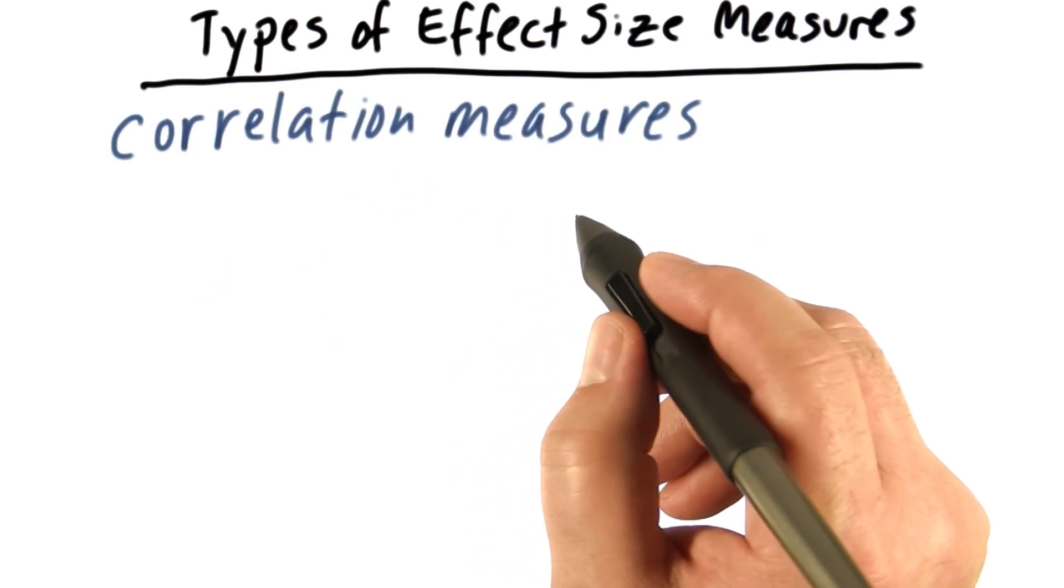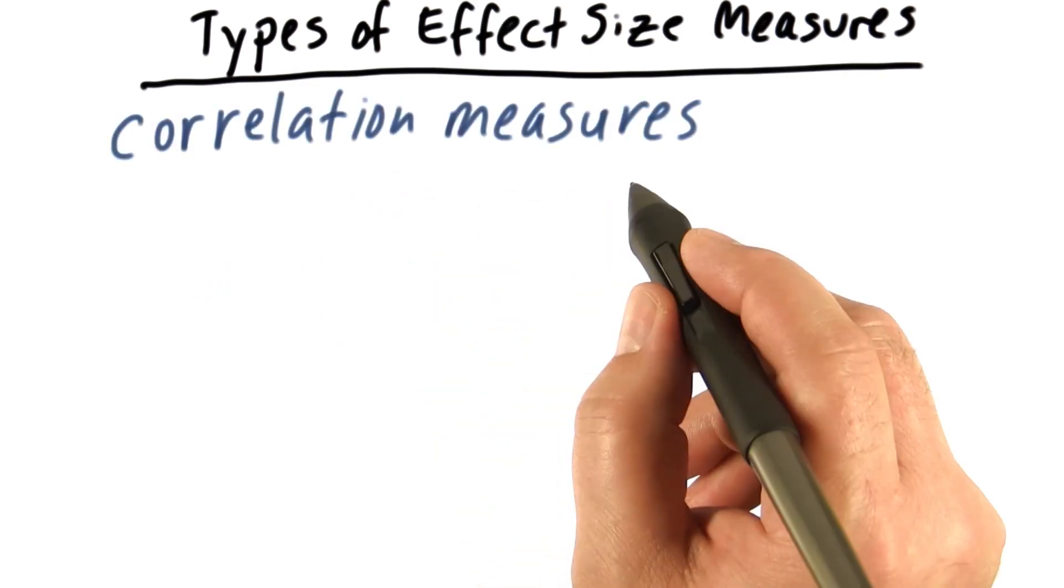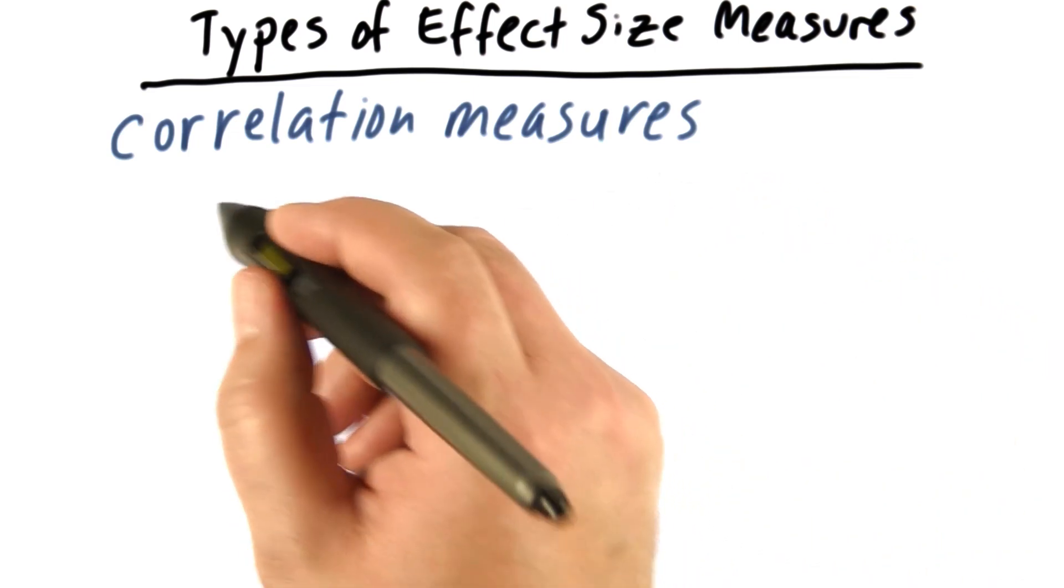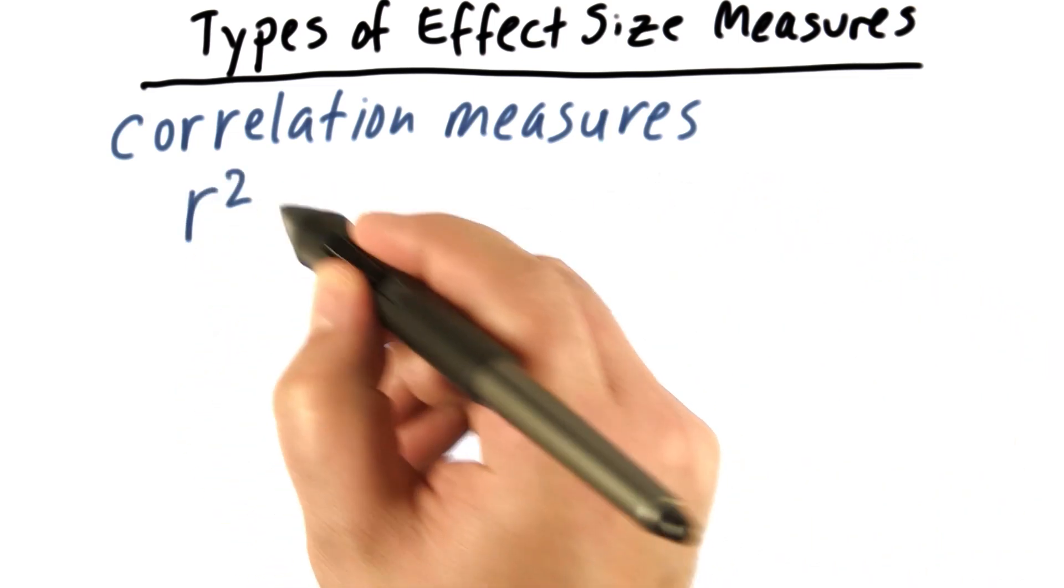The next family are called correlation measures. There are again several different correlation measures, as with standardized mean differences. We're going to focus on one, which is called R squared.